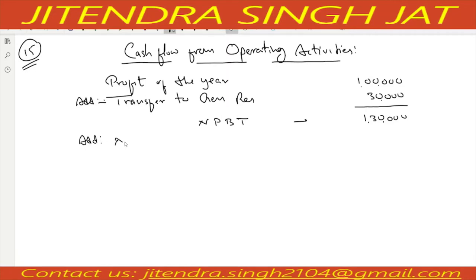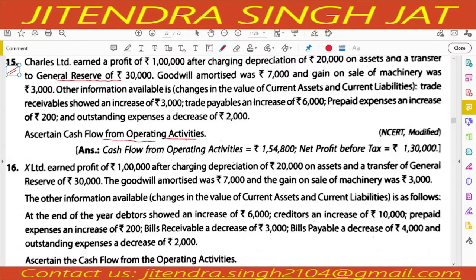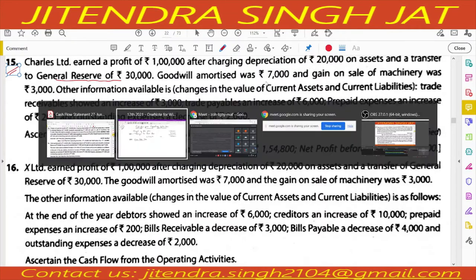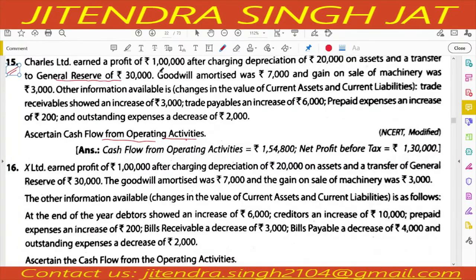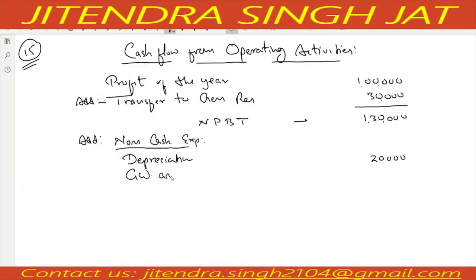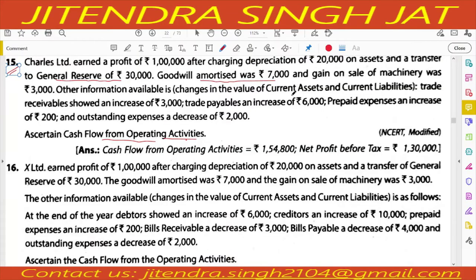Then we add non-cash expenses. Depreciation of Rs. 20,000 is given — this is a non-cash expense. Goodwill amortized is also a non-cash expense: Rs. 7,000.